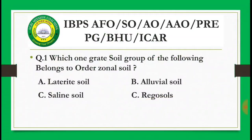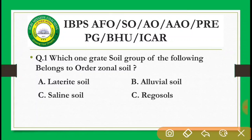First question: Which one of the following great soil groups belongs to the order Zonal soil? Options are: laterite soil, alluvial soil, saline soil, rego soils. You have to tell which soil group belongs to Zonal soil order. The correct answer is laterite soil.